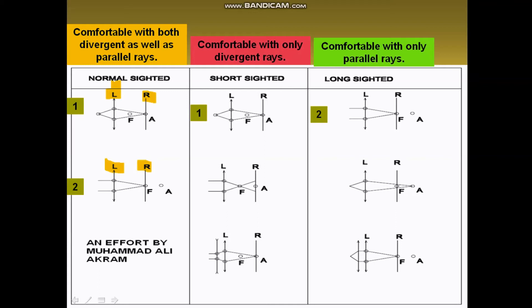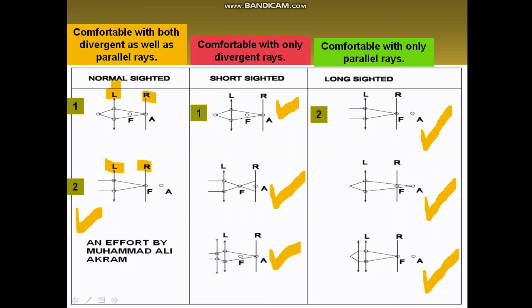You can pause the video and spend five to ten minutes on these three columns, and you will be able to understand the concepts of normal sighted, short sighted, and long sighted. The worksheet shows the short sighted person's problem and then its correction. Diagram two is also drawn for the long sighted person, showing the problem and then the correction of long sightedness.